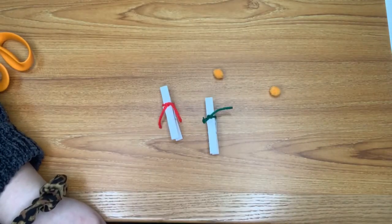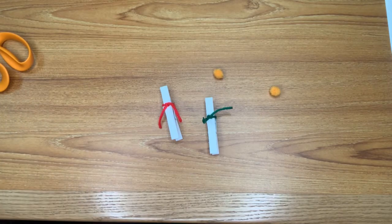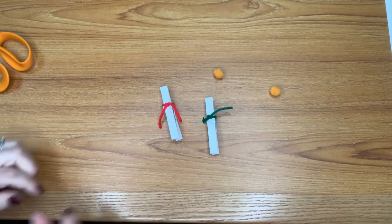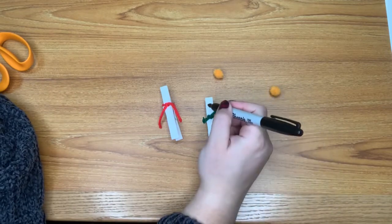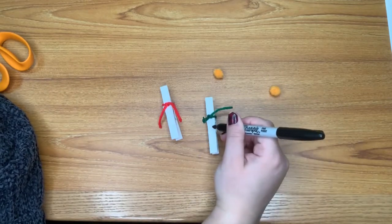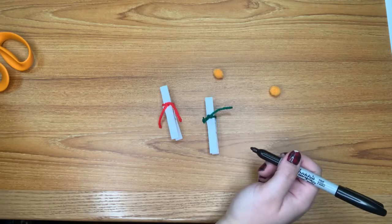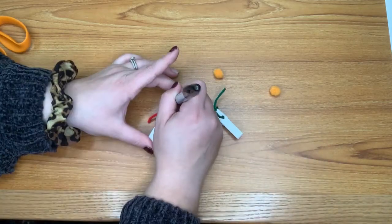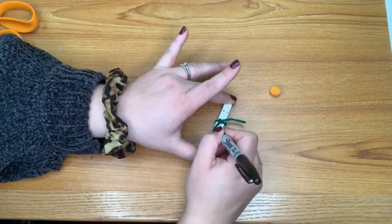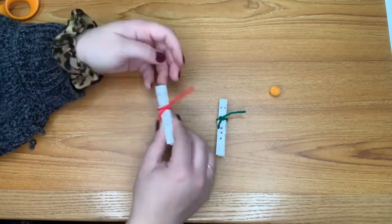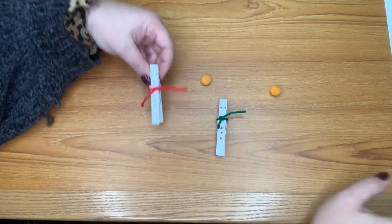Alright, now we're going to take our marker and make two black dots for the eyes, and then some dots down the front for the buttons. Now we're gonna put on our pom-pom noses.